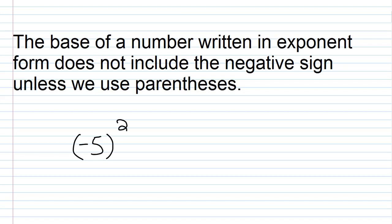If you write negative 5 squared without parentheses, your base is now 5, not negative 5. I'll explain exactly why that happens later in the lesson, but for now let's get this point clear: the base of a number written in exponent form does not include the negative sign unless we use parentheses.